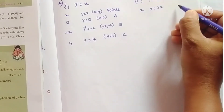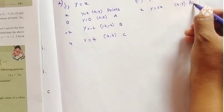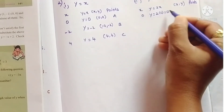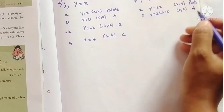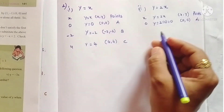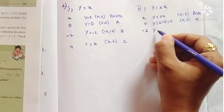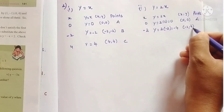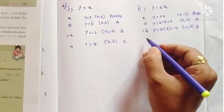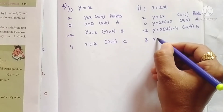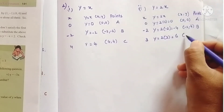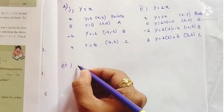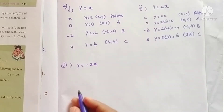For the second equation, y = 2x: if x is 0, y = 2×0 = 0, giving point A (0, 0). If x is -2, y = 2×(-2) = -4, giving point B (-2, -4). If x is 3, y = 2×3 = 6, giving point C (3, 6).